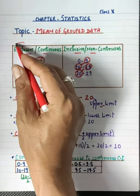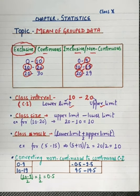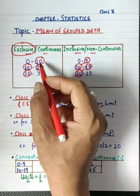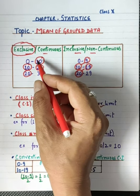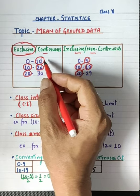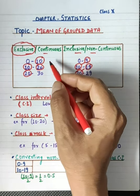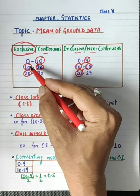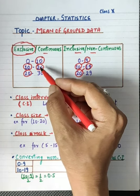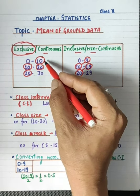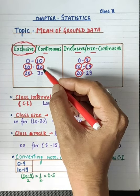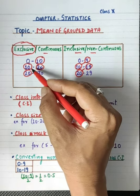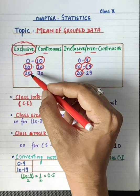The second term is 'exclusive'. The English meaning of exclusive is to remove or to exclude. So when we say 0 to 10, all readings starting from 0 are included, but 10 itself is not included — the upper limit is excluded. If any value is exactly 10, we take it in the next class interval, which is 10 to 20. That is why it is called exclusive.